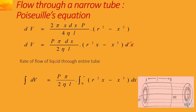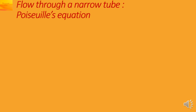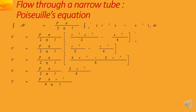The rate of flow of liquid through the entire tube is found by integrating dV. Integrating from limits 0 to R: the constant P pi upon 2 eta L is taken outside. Integration of x is x squared upon 2, so R squared times x squared upon 2 becomes R to the 4 upon 2. Integration of x cubed is x to the 4 upon 4, which at x equals R becomes R to the 4 upon 4.